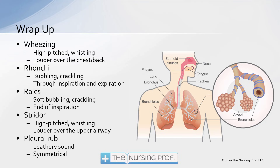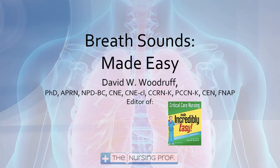Stridor is a high-pitched whistling sound heard loudest over the upper airway — often audible without a stethoscope. Lastly, the pleural friction rub is a leathery, symmetrical, often localized sound that is much different from all the others. Thank you for joining me for Breath Sounds Made Easy. My name is David Woodruff. Bye now.